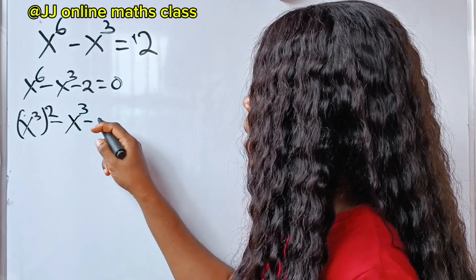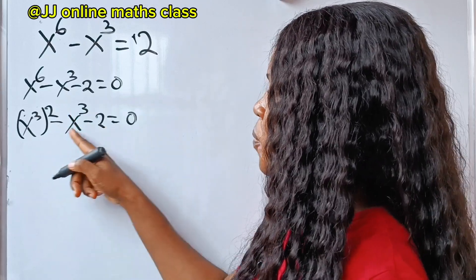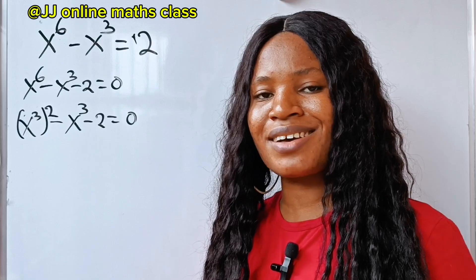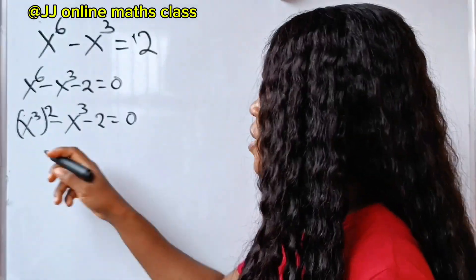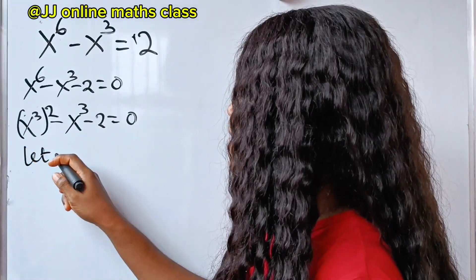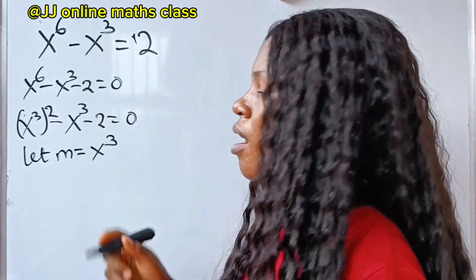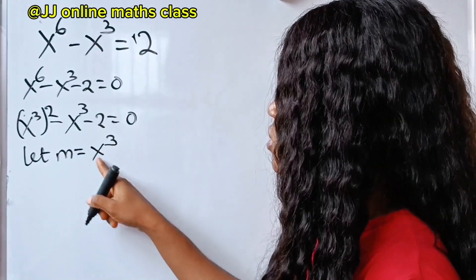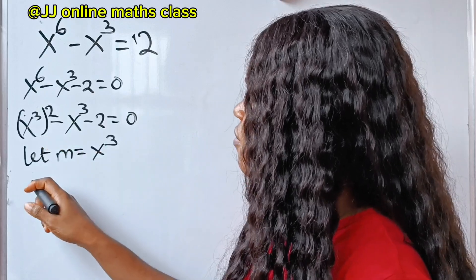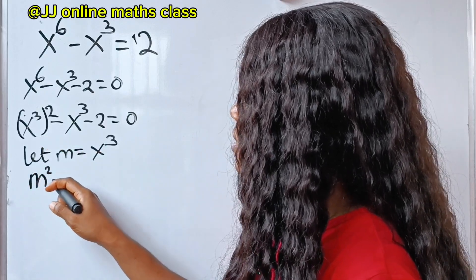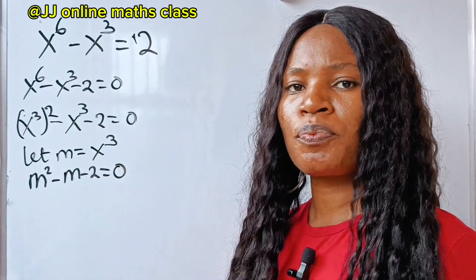So we have x to the power of 3, raised to the power of 2, minus x to the power of 3 minus 2 equals 0. Let's assign a variable for x to the power of 3. We say let m equal x to the power of 3. Substituting m into this equation, we have m squared minus m minus 2 is equal to 0.